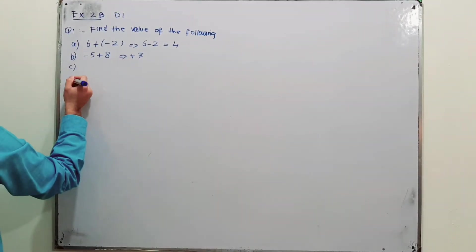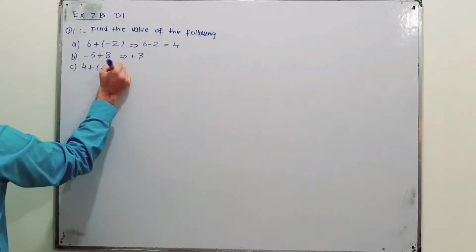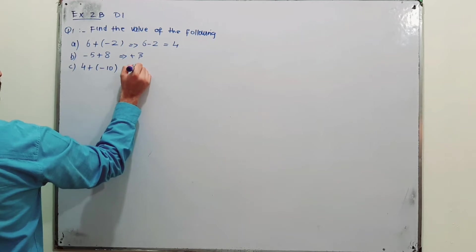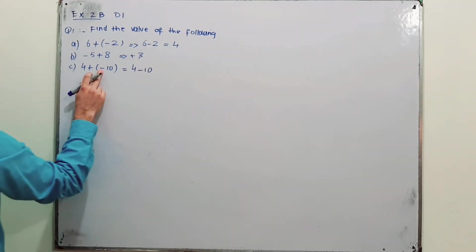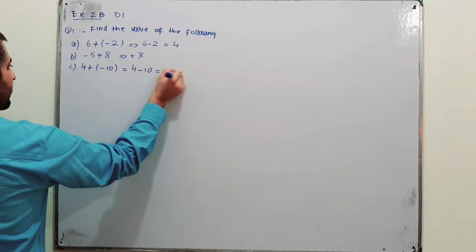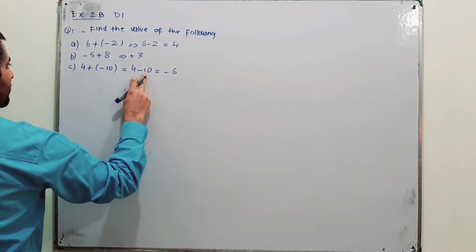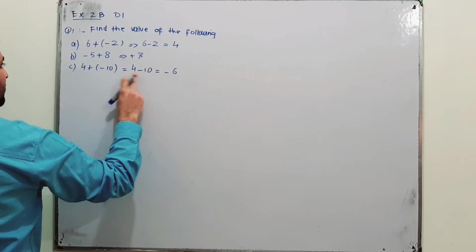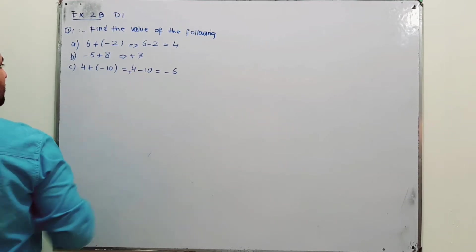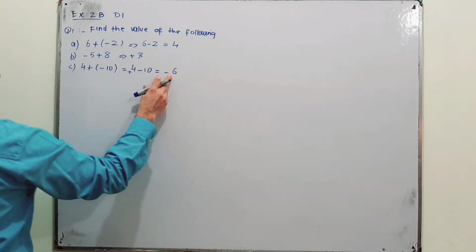Part C: 4 plus (minus 10). Remove the brackets — it becomes 4 minus 10, because the negative sign overcomes the positive sign. 4 minus 10 is minus 6, because 10 is bigger than 4, and 10 is negative, so we retain the sign of the bigger number.